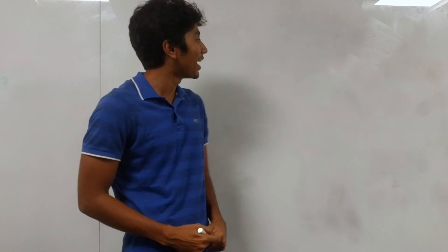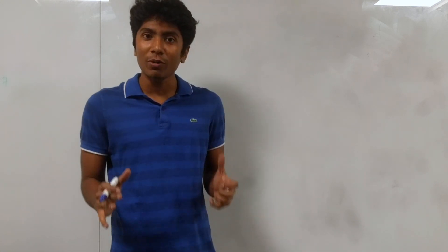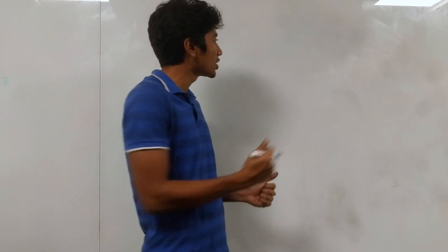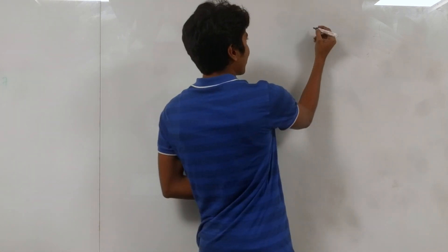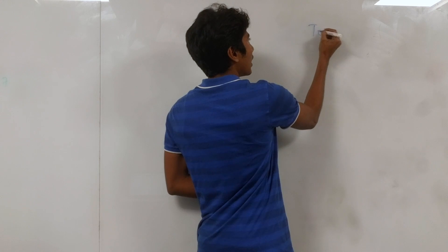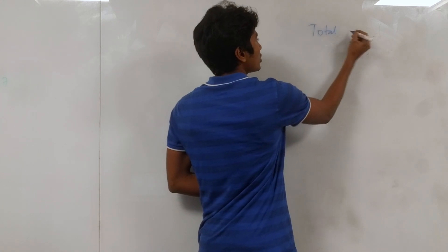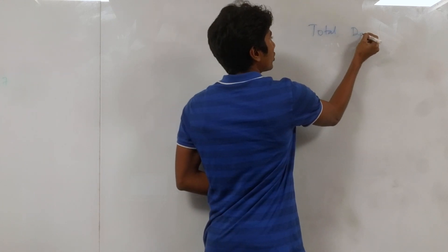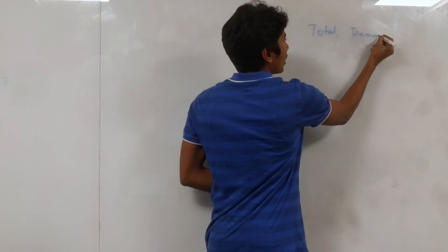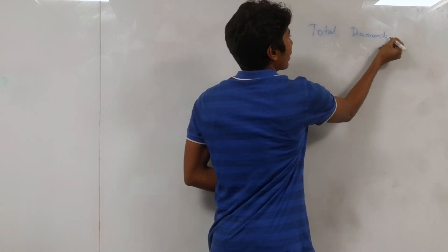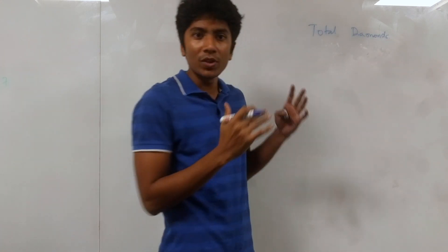Hi guys, it's GKCS. I'm talking about a third problem from CodeShop this time, which is 'Total Diamonds.' As you can expect, you need to calculate the total number of diamonds in this problem.